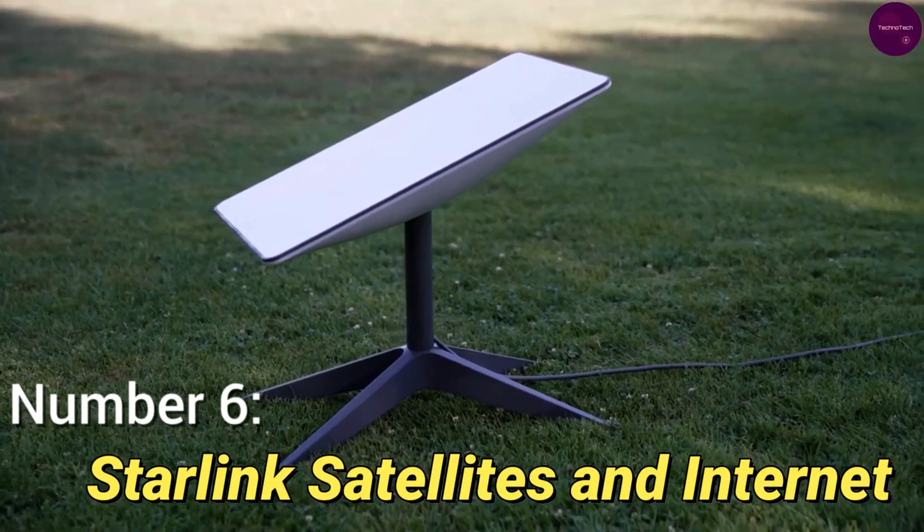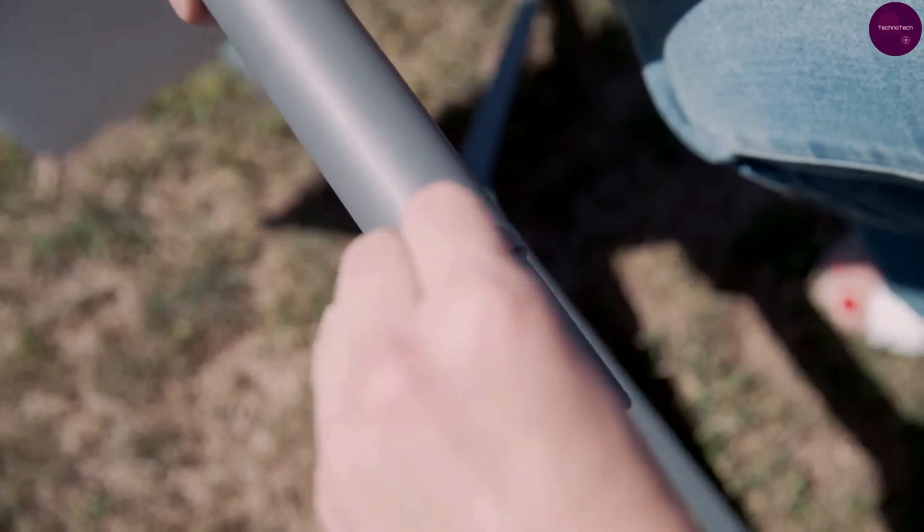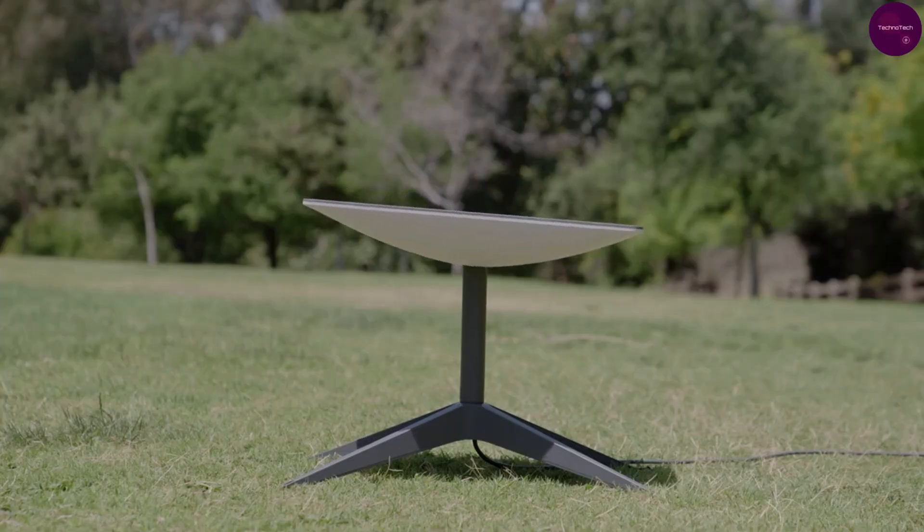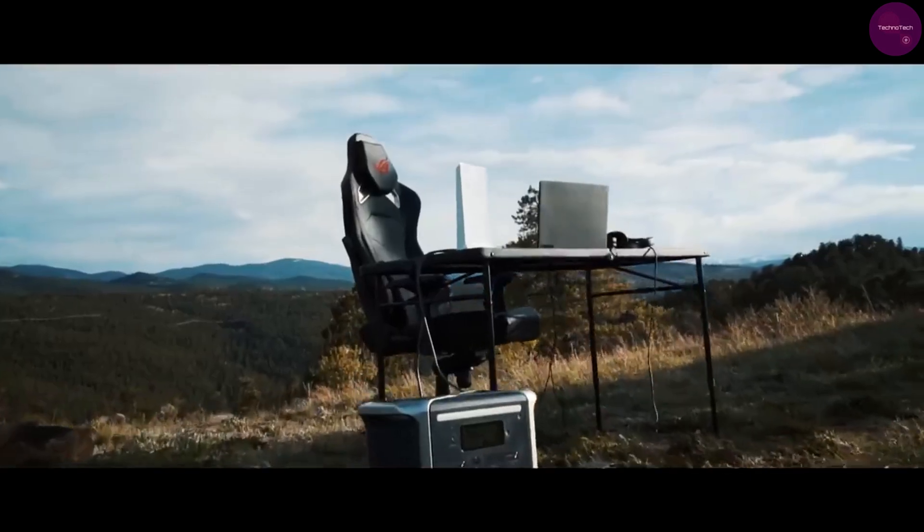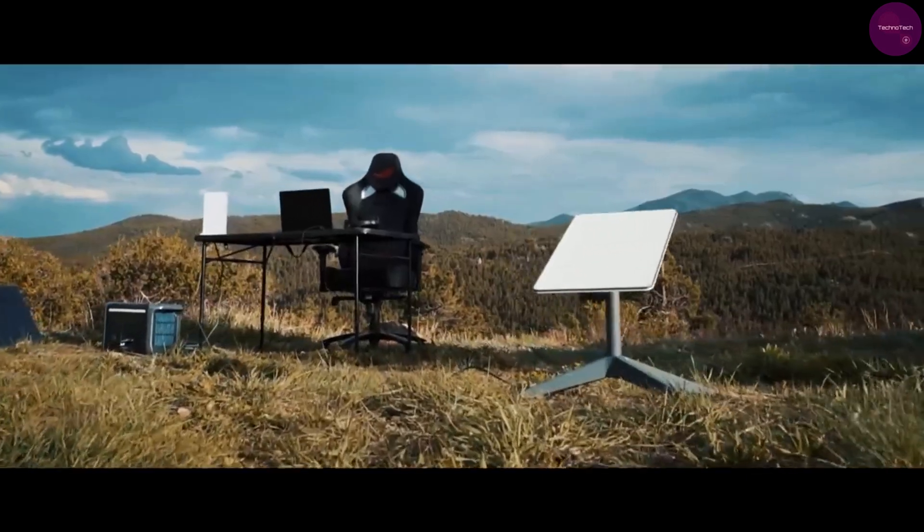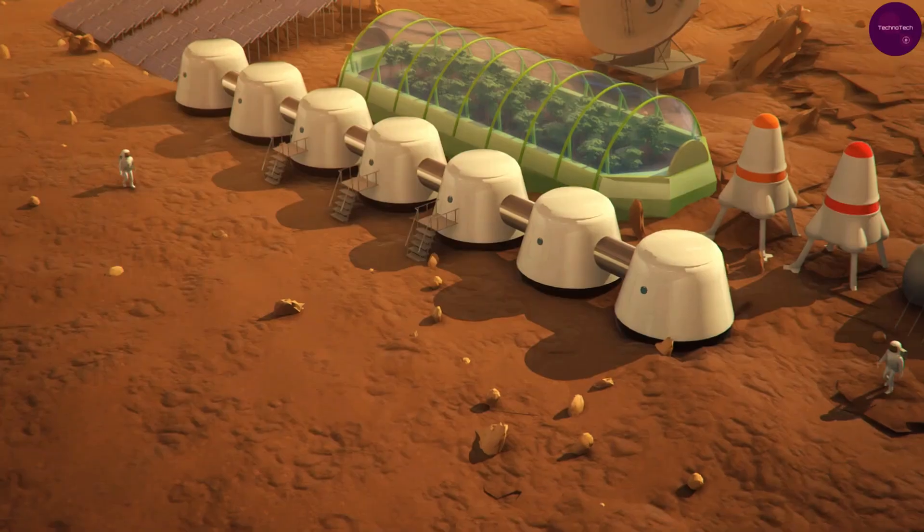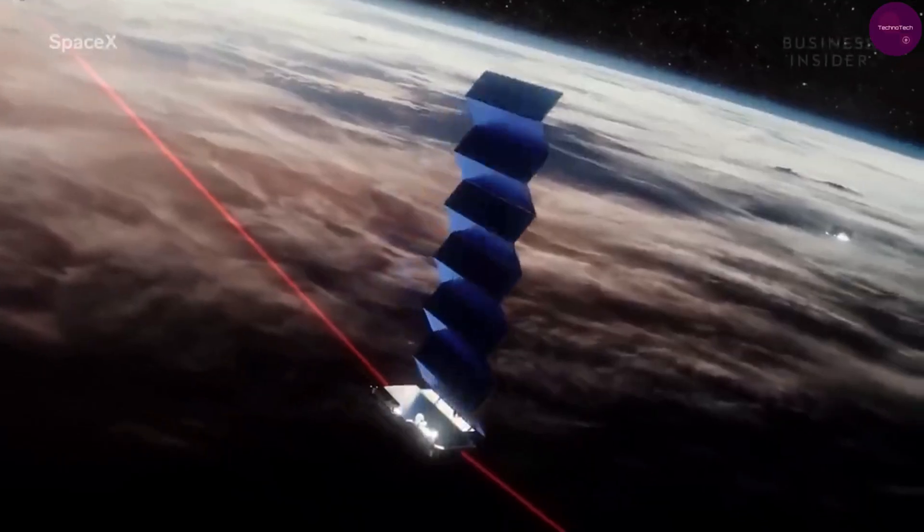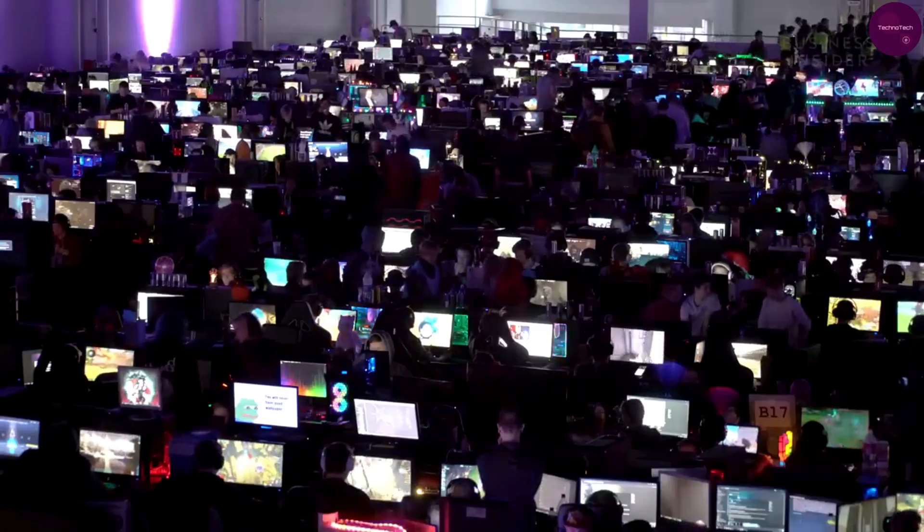Number 6: Starlink satellites and internet. Taking the sixth spot on our list is Starlink, SpaceX's ambitious satellite internet constellation. With its rapidly expanding network of low-Earth orbit satellites, Starlink aims to provide high-speed internet access to even the most remote corners of the globe. But beyond bridging the digital divide on Earth, Starlink could also play a crucial role in future space exploration missions, providing interplanetary internet connectivity for long-term space missions and colonization efforts.